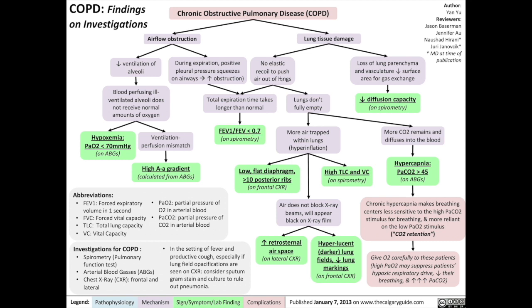Not enough elastic recoil to push air out of the lungs also means the lungs don't fully empty. More air trapped within the lungs results in a low, flat diaphragm, meaning that on a frontal chest x-ray, more than 10 posterior ribs can be seen clearly.